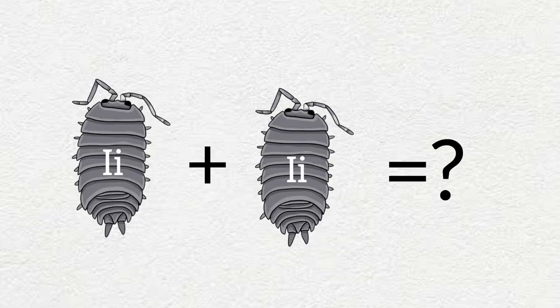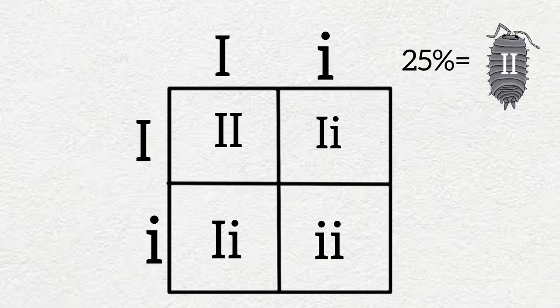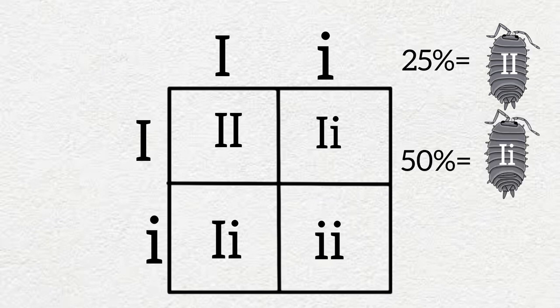So what will be the result if we breed two of these heterozygous isopods? Let's find out. The Punnett square is complete and we can see that 25% of the offspring will have two dominant alleles making them homozygous dominant with gray coloration. 50% of the offspring will have one dominant and one recessive allele making them heterozygous with gray coloration.